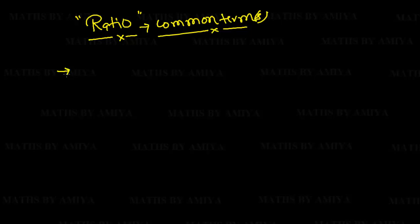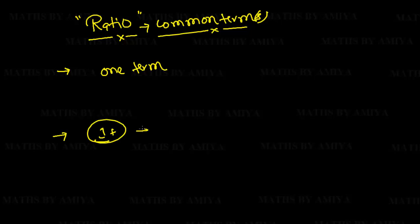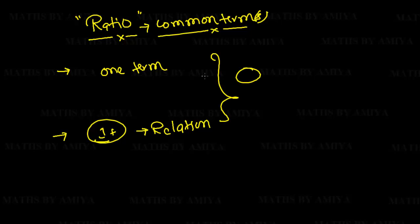There are mainly two types of merging the ratio or getting the simplest form. One is one term common, and another one is more than one term common — that is nothing but a relation common. In both cases, we find what is common and equate the common part either by LCM or by cross multiplying.